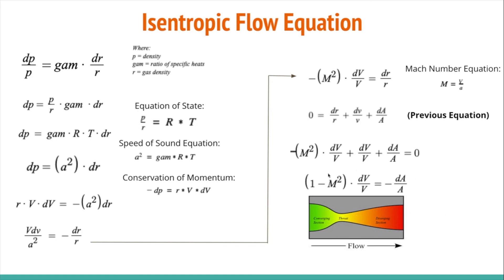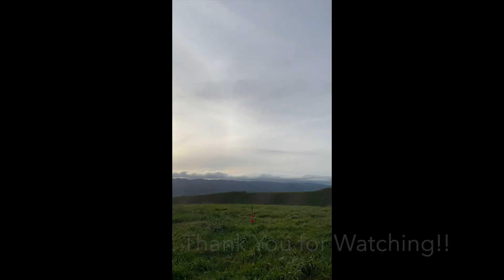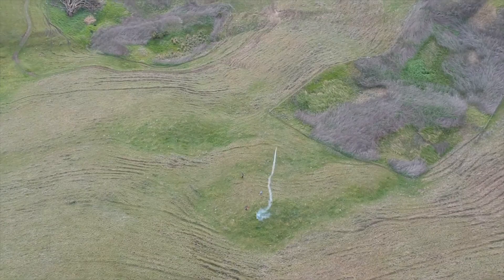Another interesting thing to note: if we take the limit as Mach number approaches one, the term (1 − M²) becomes infinitesimally small. Dividing through, dv/v goes to infinity — so theoretically the most efficient nozzle has a mass flow rate at Mach 1 at the throat. If you are interested in this topic and would like to learn more, please check out my paper for an in-depth analysis.